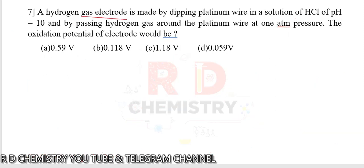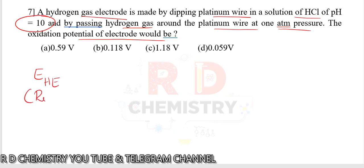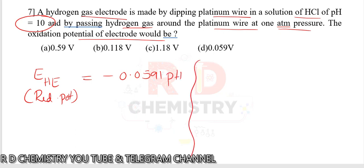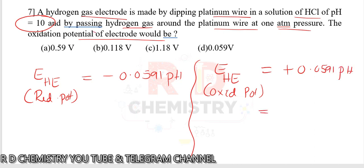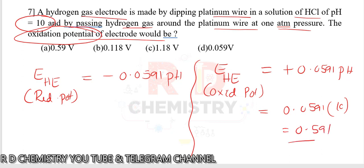Question 7. A hydrogen gas electrode is made by dipping a platinum wire in HCl of pH 10, passing hydrogen gas at 1 atmosphere. The oxidation potential of the hydrogen electrode equals +0.0591 times pH. With pH equal to 10, the oxidation potential is 0.591 volts. The answer is option A.